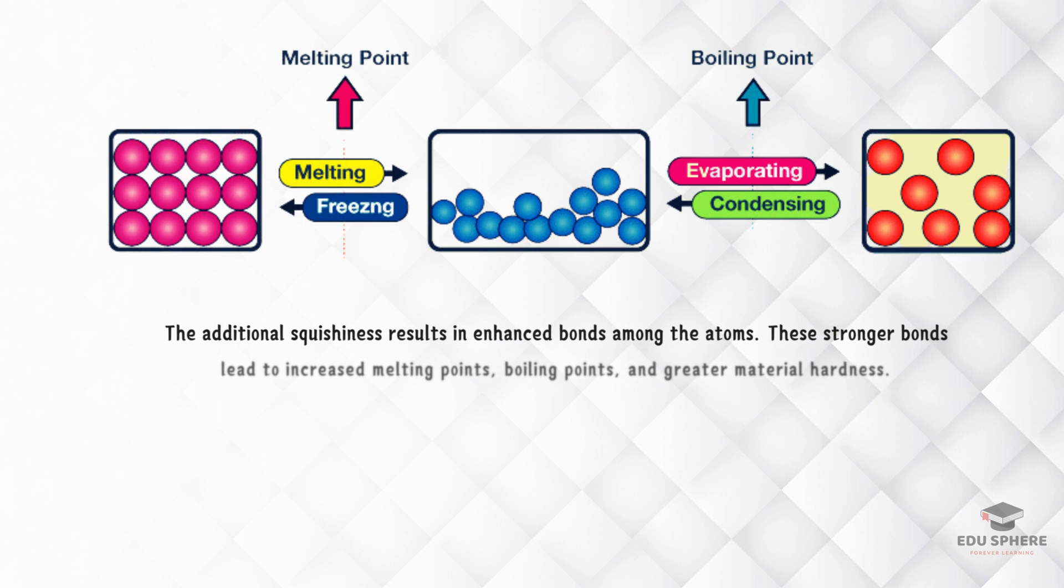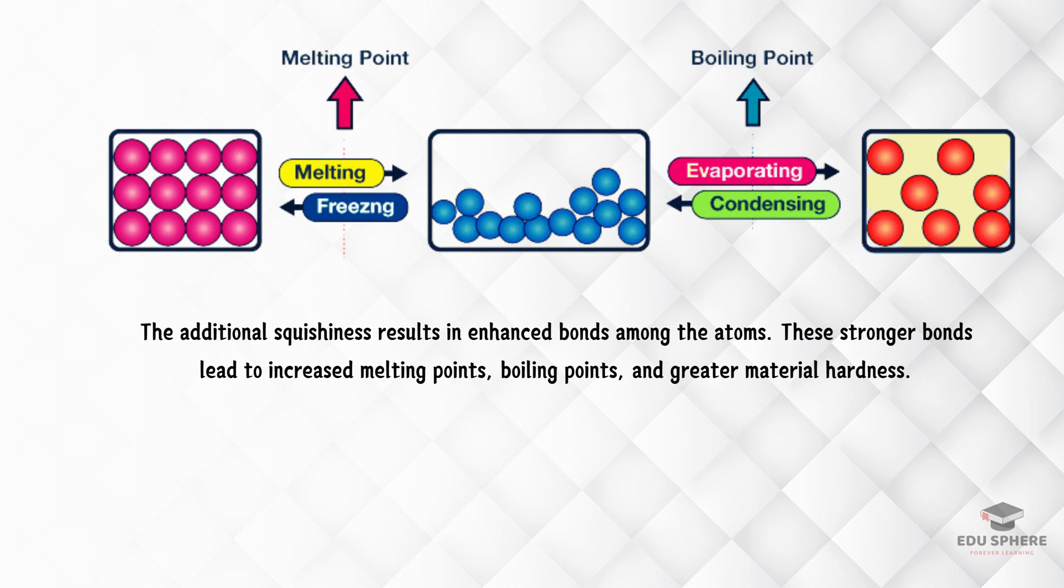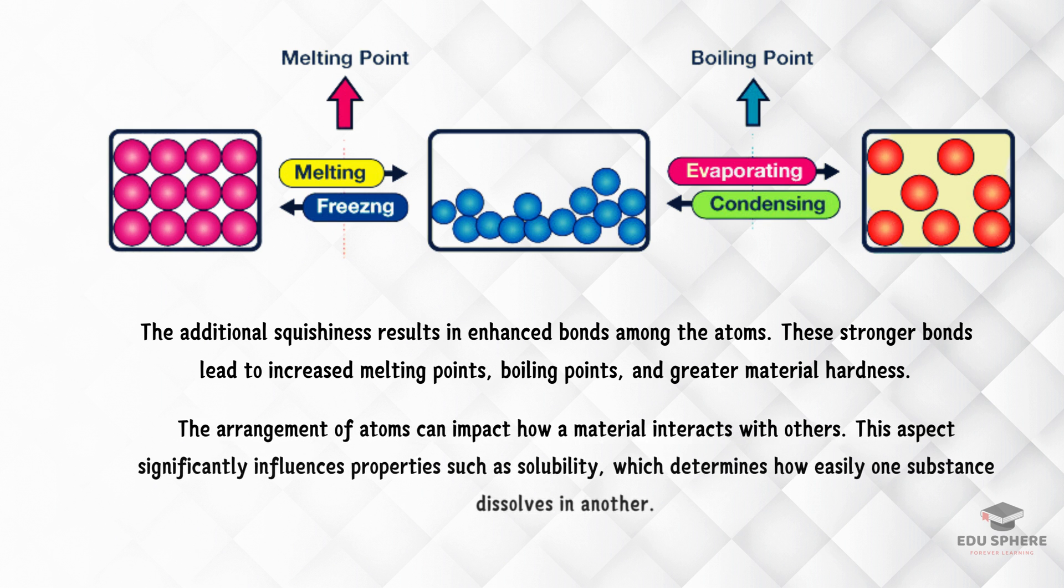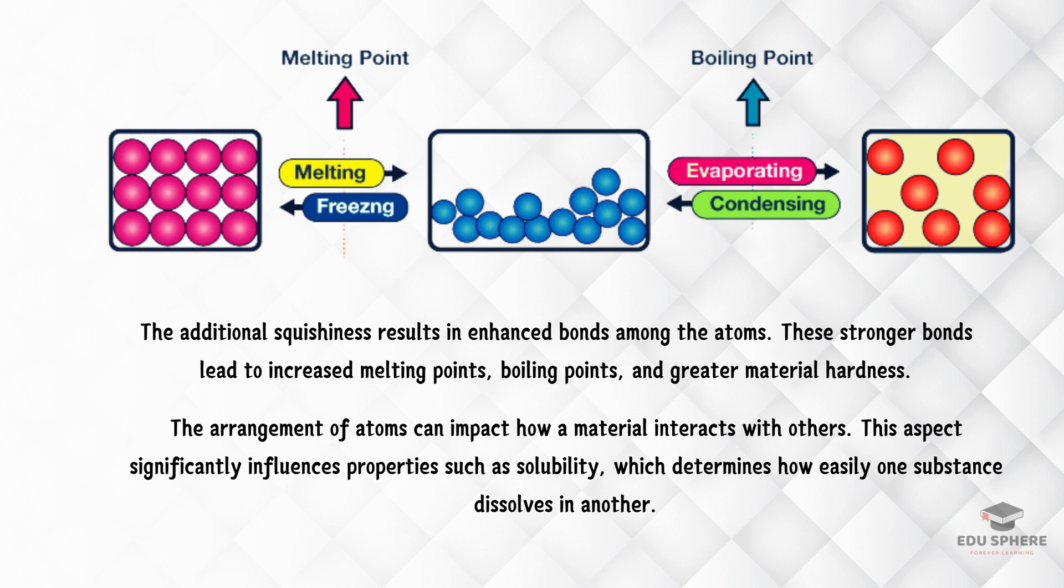Now, stronger bonds mean higher melting points, boiling points, and even material hardness. The way atoms are packed can also affect how a material interacts with others. This plays a big role in things like solubility, which is how easily one material dissolves in another.